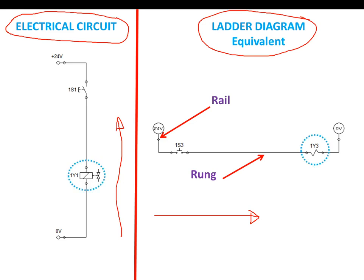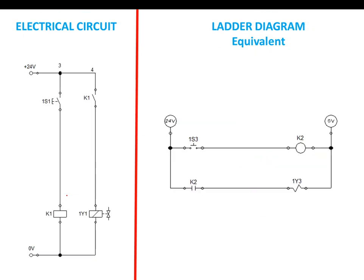The solenoid has the same function but looks different on both circuits. On the ladder diagram it looks like a coil, and on the electrical circuit it looks like a rectangular shape. The relay on the ladder diagram looks circular, whereas it is rectangular on the electrical circuit. Likewise, there are minor differences in the relay contacts.